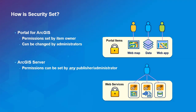In Portal for ArcGIS, there's a concept of ownership. When you publish an item or create a service, you own it, and as the owner, you have the power to set privilege and permission. Administrators can override ownership and change sharing settings. Unlike ArcGIS Server — where any publisher or administrator had full access — Portal has an ownership model where owners can share items and manage privilege. This can shift some administrative burden onto users if you trust them to manage it.